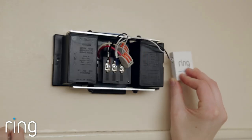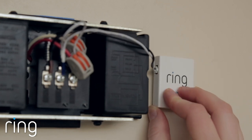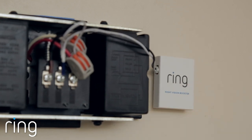If the Pro Power Kit doesn't fit inside your doorbell, you can also attach it to the wall next to your doorbell, like this.